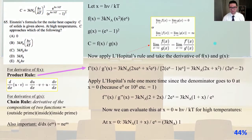Now apply L'Hôpital's rule and take the derivative of F(x) and G(x). F'(x) divided by G'(x) equals 3kₙA times (2xe^x + x²e^x) divided by 2(e^x - 1)e^x. And that equals 3kₙA times (2x + x²) divided by (2e^x - 2). Now we're going to need to apply L'Hôpital's rule one more time since the denominator goes to 0 at x equals 0 because e⁰ or 10⁰ etc. is going to equal 1.